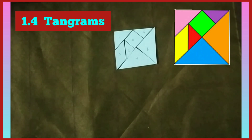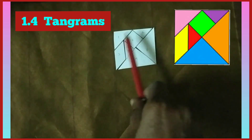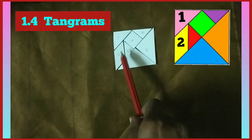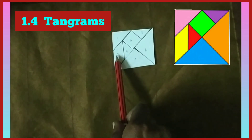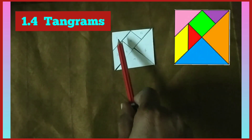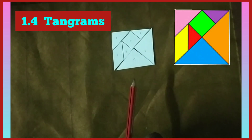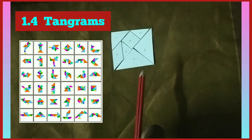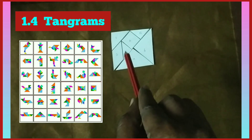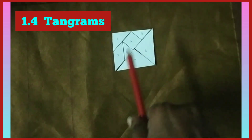Tangrams. A tangram is a traditional Chinese puzzle made of a square divided into seven pieces: one parallelogram, one square and five triangles, that can be arranged to match particular designs. We can make figures of animals, people and many things using these seven pieces. Children, let us arrange some things using these seven pieces.